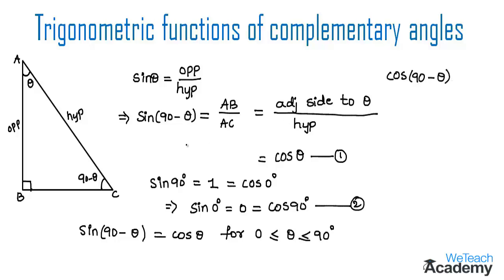From the definition of cos theta, cos 90 minus theta equals adjacent side by hypotenuse side. From the figure, BC becomes the adjacent side to angle 90 minus theta whereas AC becomes the hypotenuse side. So we can write BC by AC.